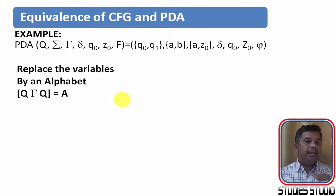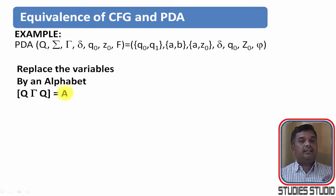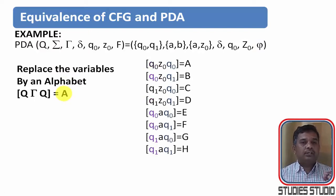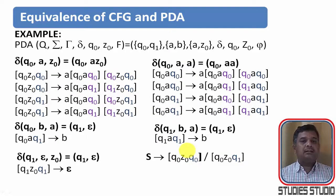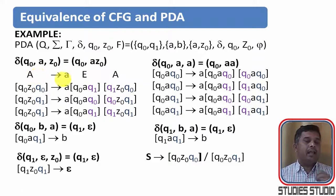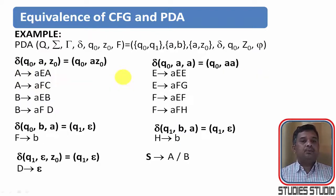Now let us replace the variables in the form (Q, Tau, Q) with single alphabet symbols for convenience. We assign: Q0 Z0 Q0 = A, Q0 Z0 Q1 = B, and similarly up to Q1 A Q1 = H. Substituting these into the productions, we get A derives A E A, and other corresponding productions in the simplified notation.